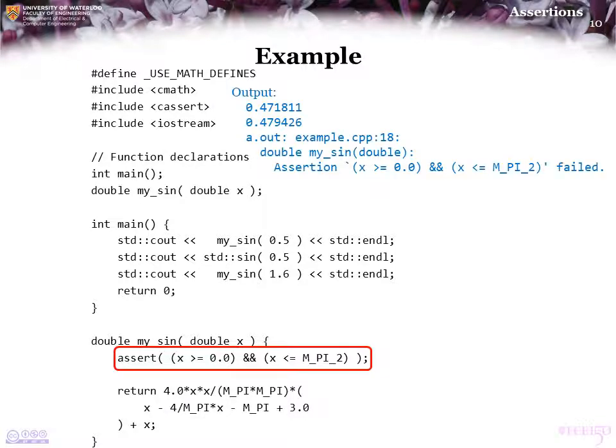And so if we compile and execute this code, notice that my sine is accurate to just about two significant digits. However, when we try to calculate my sine with an argument of 1.6, we get that the assertion failed.